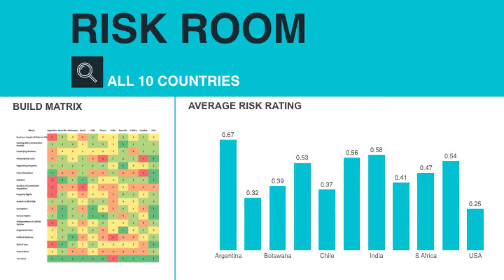Using the Zurich Risk Room, we were able to identify the most attractive investment opportunities based on their potential risk-adjusted returns. We built a heat map where we rated each individual country risk on a scale of one to five — five being most risky, one being least risky. We also used the Zurich Risk Room data to build an average risk rating for each country, using the political risks and business risks to create a rating.